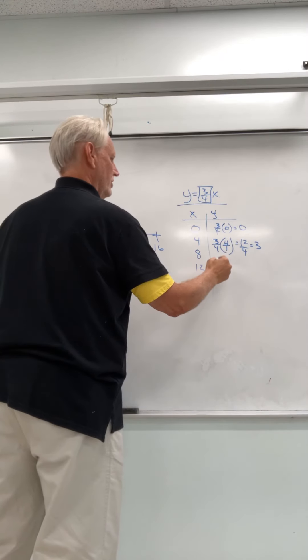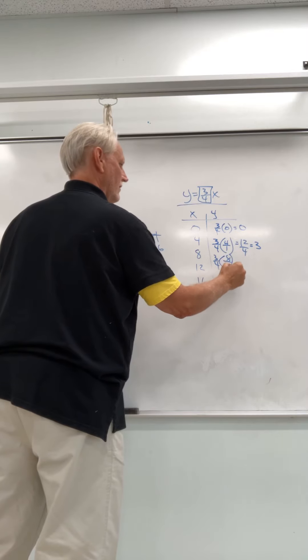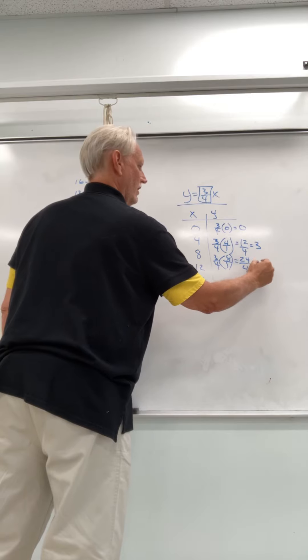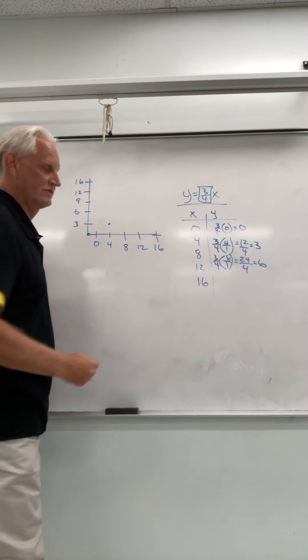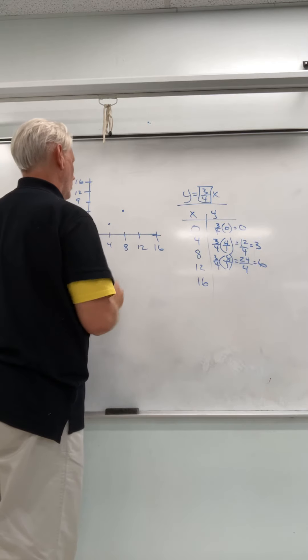My next point is going to be 3 fourths times 8 over 1. That's going to give me 24 over 4, and that simplifies to 6. So we go over 8, up 6, and we put our point.